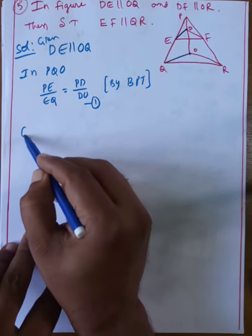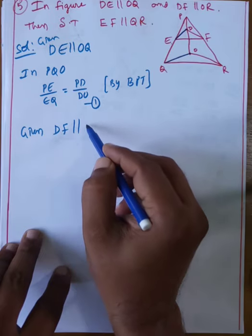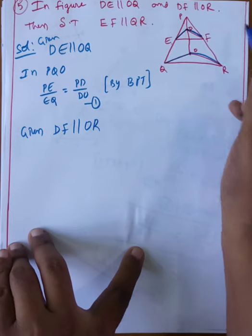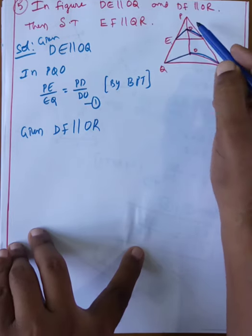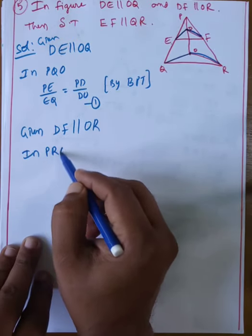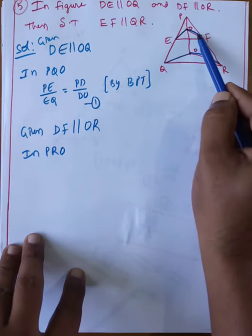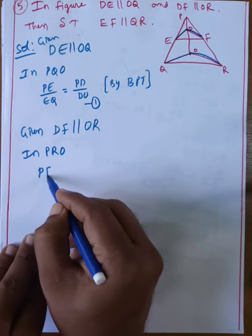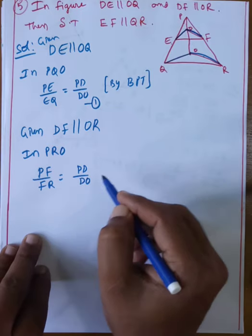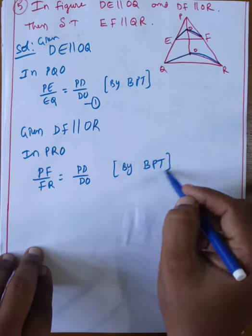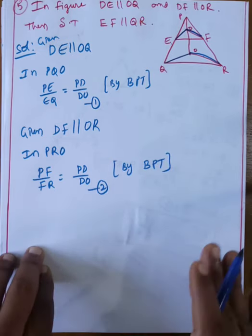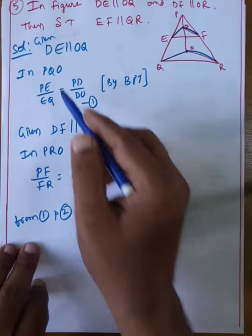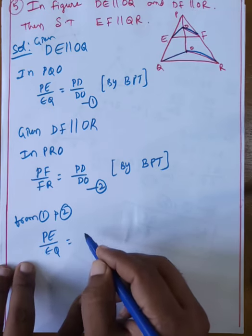DF is parallel to OR in triangle PRO. By BPT, PF by FR equals PD by DO. This is equation number two. From equations one and two, since PD by DO is common, PE by EQ equals PF by FR.